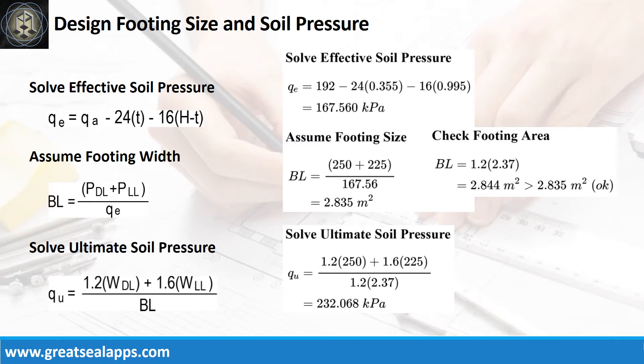Given allowable soil pressure equals 192 kPa, depth from natural grade line equals 1,350 mm, and assumed footing depth equals 355 mm. The effective soil pressure is 167.56 kPa. Given axial dead load of 250 kN and axial live load of 225 kN, the footing width is 1.2 meters and footing length is 2.37 meters. The ultimate soil pressure is 232.068 kPa.